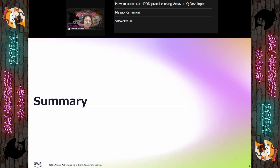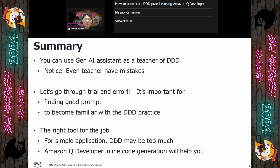Let's summarize the key points from my session. You can use an AI assistant as a teacher of DDD. But notice — just like a real teacher, AI is not perfect. You should learn about DDD and modeling by yourself, and eventually you have to be able to judge for yourself. For that, go through trial and error — the best way to learn is by doing it yourself. And DDD is not a silver bullet either. For example, a simple application may not match well with DDD. Of course, you can also get support from Amazon Q Developer to build those simple applications. Let's choose the right tool for the job. This concludes my presentation. Thank you very much. Please enjoy the rest of this crazy event.